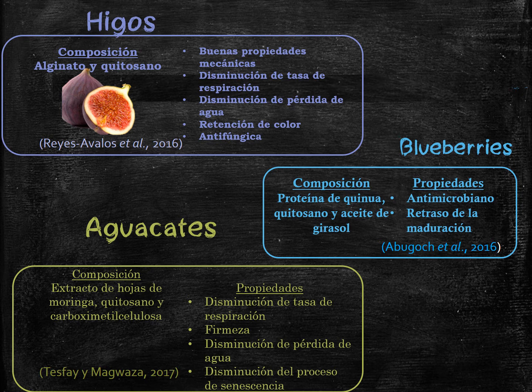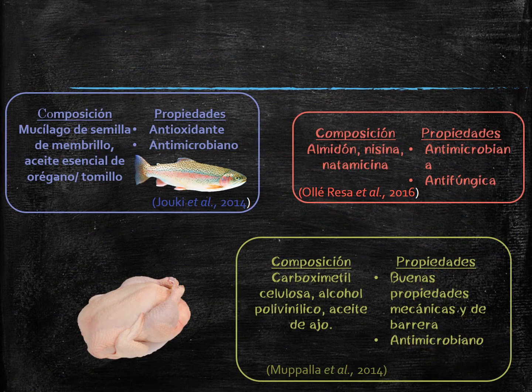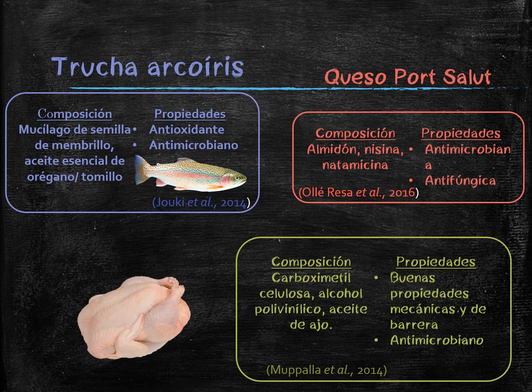An edible coating with moringa extract, chitosan, and carboxymethyl cellulose was evaluated on avocados, decreasing the respiration rate, maintaining firmness, decreasing water loss, and delaying senescence. An edible coating made of quince seed mucilage with oregano and thyme essential oil applied on rainbow trout had great antioxidant and antimicrobial properties. An edible coating on port salut cheese with a starch, nisin, and natamycin composition displayed antimicrobial and antifungal properties, extending shelf life. An edible coating with carboxymethyl cellulose, polyvinyl alcohol, and garlic extract applied on chicken yielded good mechanical and barrier properties along with antimicrobial activity.